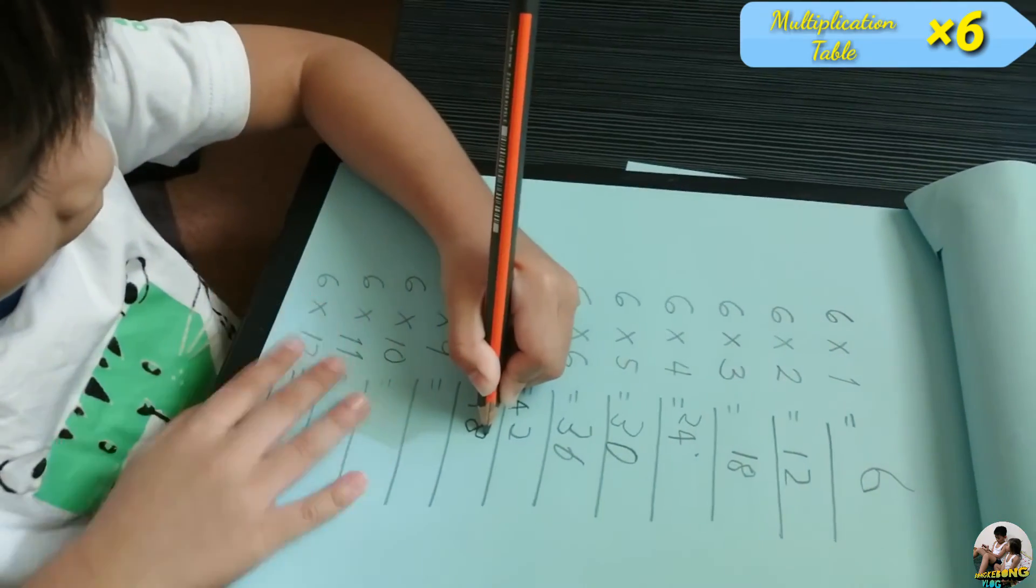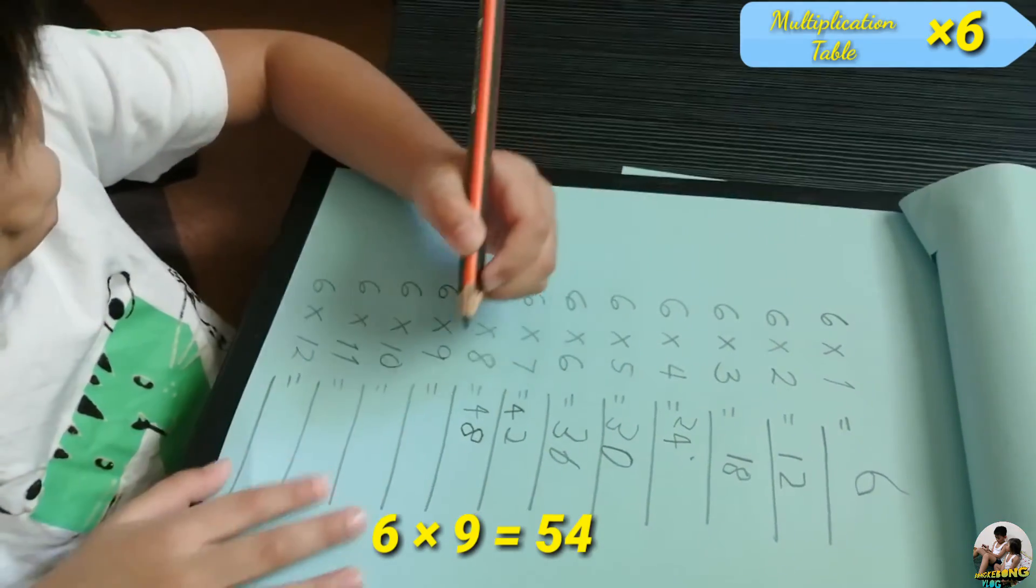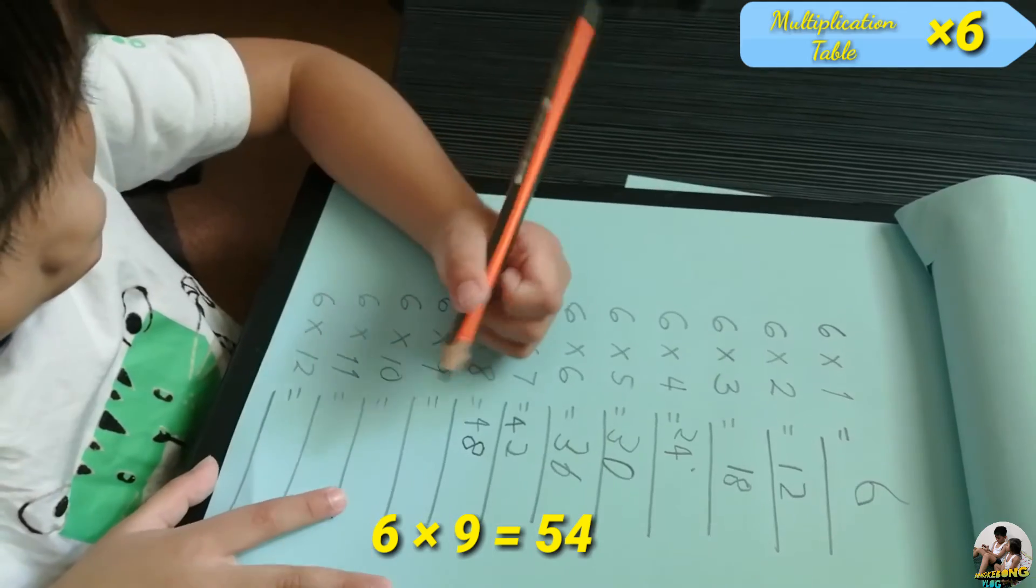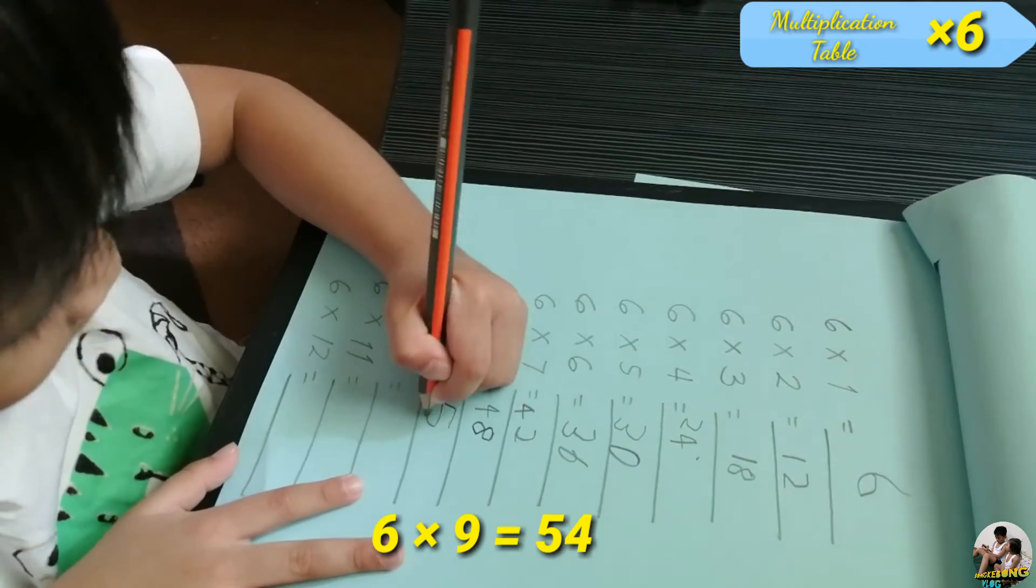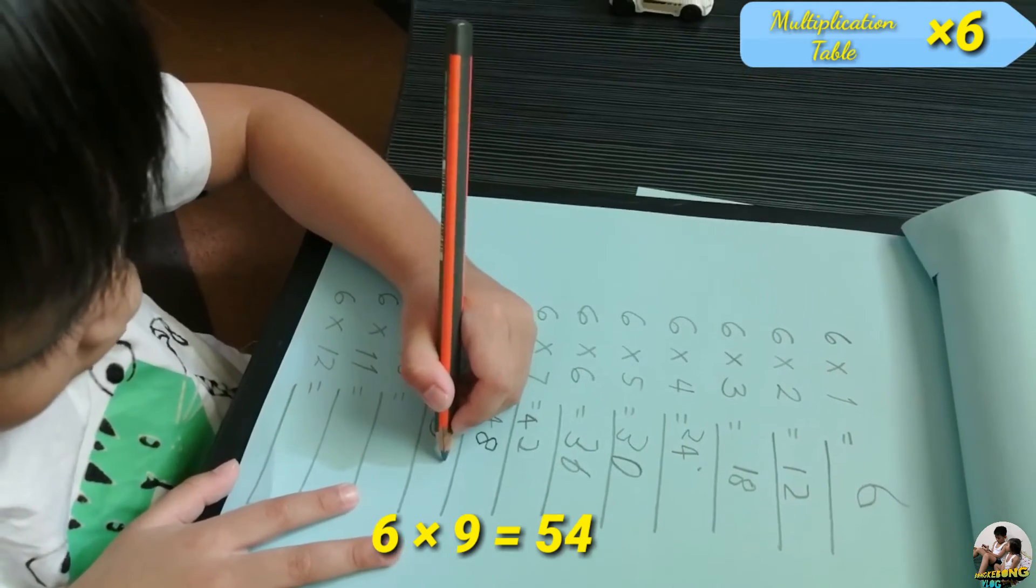And this one. Six times nine equals... Six times nine equals fifty-four. Very good.